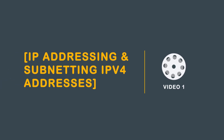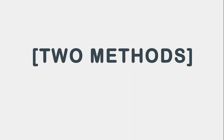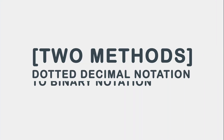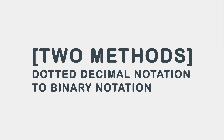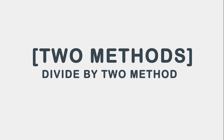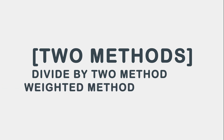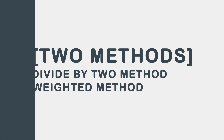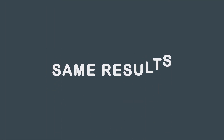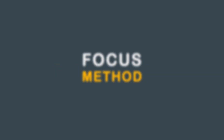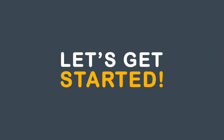Greetings and welcome to the first video on IP addressing and subnetting IPv4 addresses. Today we will demonstrate two different methods for converting dotted decimal notation to binary notation and vice versa. The first method is the divide by two method. The second and more popular is the weighted method. Both methods produce the same results, so if you grasp one better than the other, focus on that method. Let's get started.